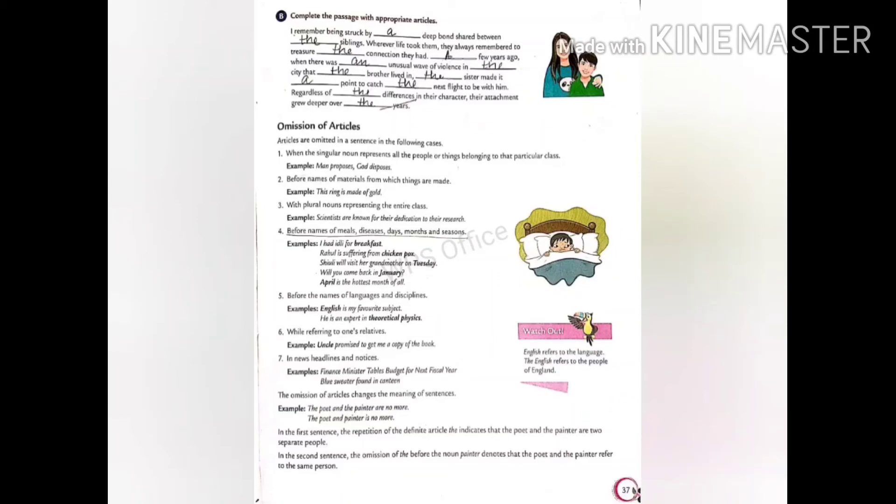The omission of article changes the meaning of the sentence sometimes. For example, the poet and the painter are no more. The poet and painter is no more. Here, you have to revise the point which we have learned in subject and verb agreement. If the is being written before both the nouns, that means the persons are two in number.